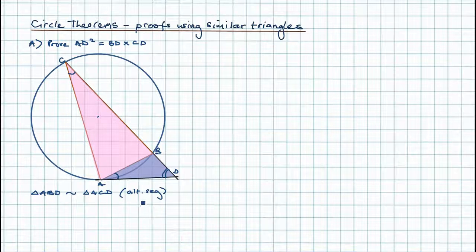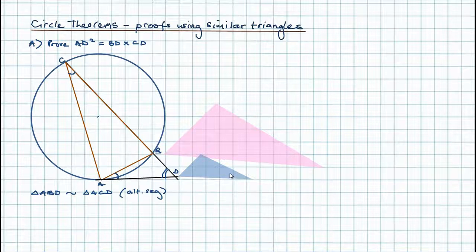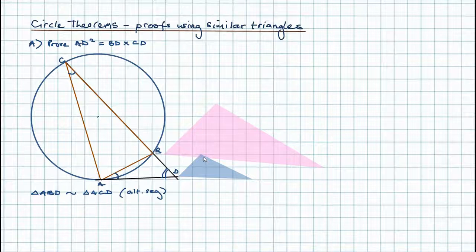Now I'm going to take the coloured tracing paper and move it to one side so you can see more clearly that they are similar. Rotating and reflecting, you can see they're definitely similar triangles with the same angles. If they are similar triangles, the ratio of the sides must also be the same — for example if one side is one and the corresponding side is four, that one-to-four relationship holds for all corresponding sides.